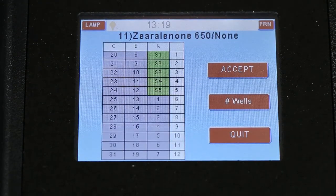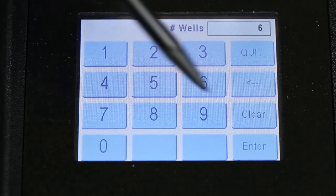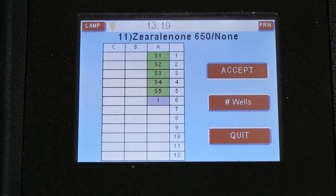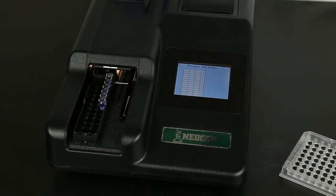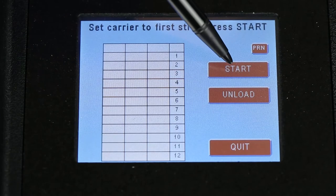Select the number of wells you want to read by pushing number wells, then press select. Set the carrier to the first strip and place the microwell strip in the carrier with the zero control entering the reader first. Press start.